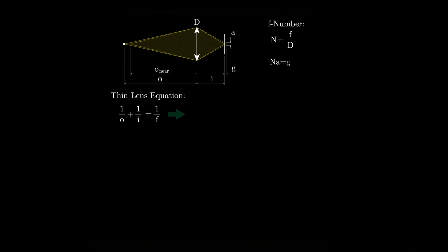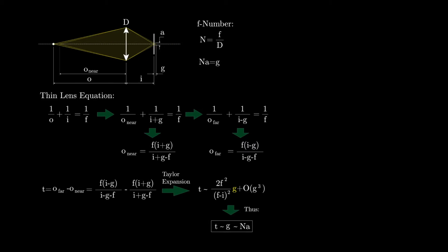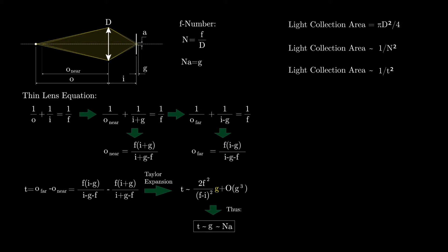If we go through the math and you can pause here if you want to check we find that the f number of the lens is proportional to the thickness t of the volume that needs to be in focus. But a larger f number means we collect less light by a factor of 1 over t squared.